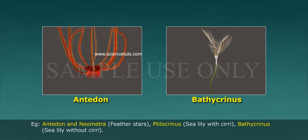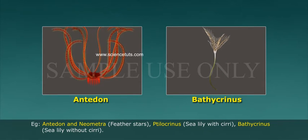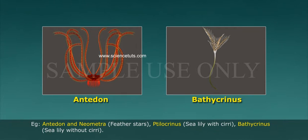Tropiometra is a sea lily with cirri, while Bathycrinus is a sea lily without cirri.